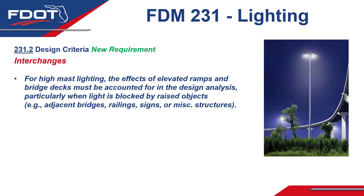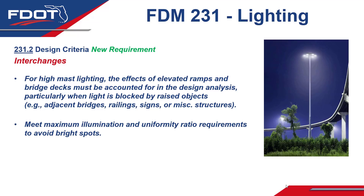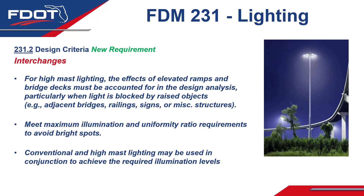As a clarification for good engineering judgment, for high mass lighting, the effects of elevated ramps and bridge decks must be accounted for in the design analysis, particularly when the light is blocked by raised objects. This can happen a lot with multi-level interchanges — you want to account for adjacent bridges, railings, signs, or miscellaneous structures that may block the light. A simple 2D design is not sufficient. Additionally, meet the maximum illumination and uniformity ratio requirements from Table 231.2.1 to avoid bright spots. Conventional and high mass lighting may be used in conjunction to achieve required illumination levels where structures block the light.